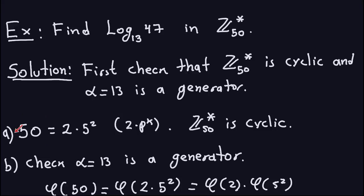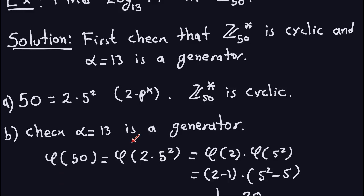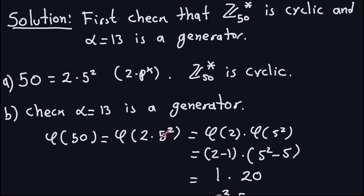Next, I need to verify 13 is a generator. For that I compute φ(50). Since 50 = 2 × 5², and φ distributes over distinct prime factors: φ(50) = φ(2) × φ(5²) = (2 − 1) × (5² − 5¹) = 1 × 20 = 20. I also factor 20 as 2² × 5, because I need the prime divisors of φ(50) to check whether 13 is a generator.